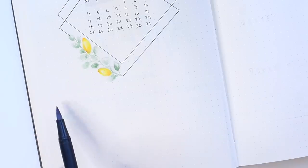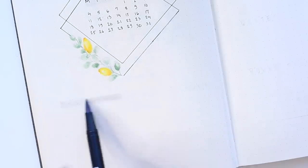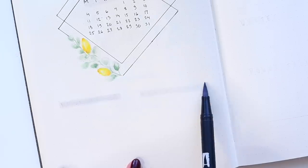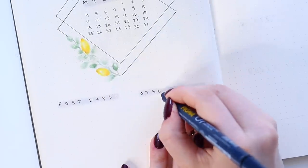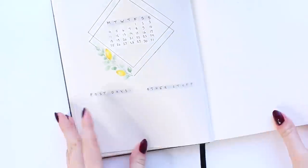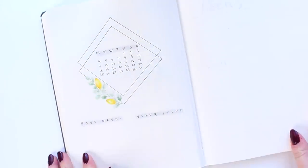Under the calendar, you can add some kind of important day section. It could be work or school related. Personally, I wanted to find a place for my YouTube and Instagram posting days. So I have that here, and then other stuff.